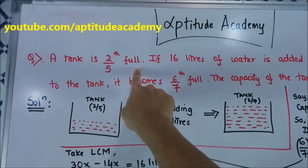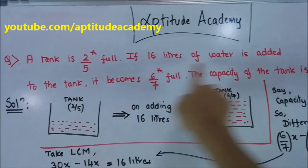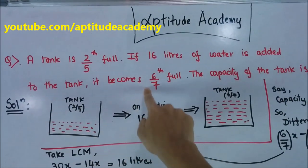A tank is 2 by 5th full. If 16 liters of water is added to the tank, it becomes 6 by 7th full.